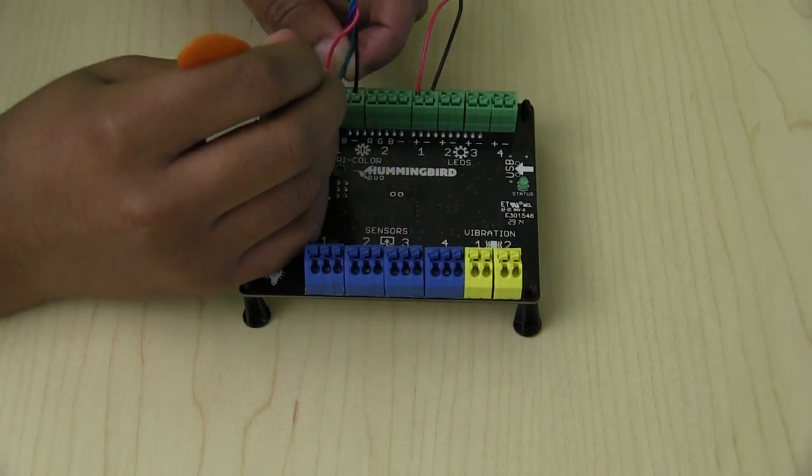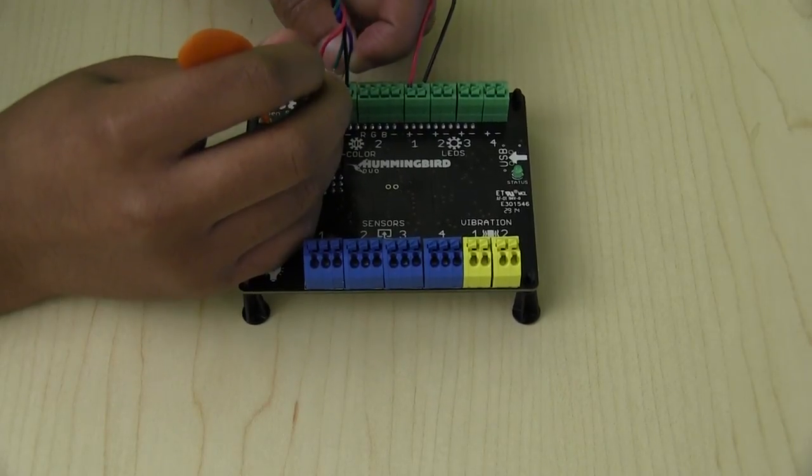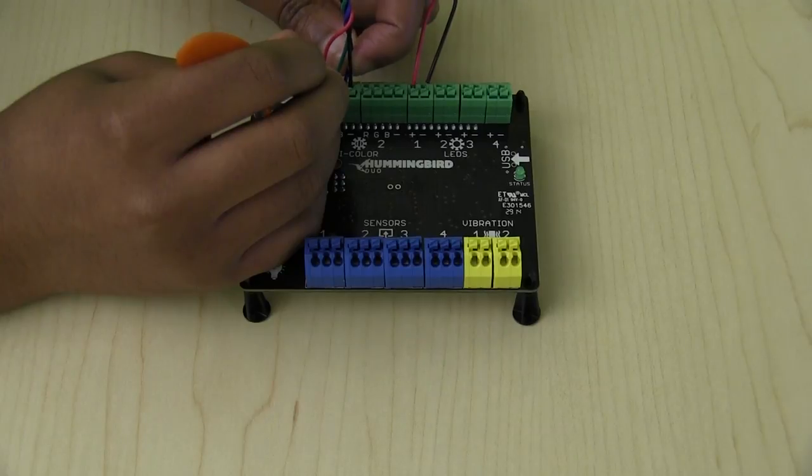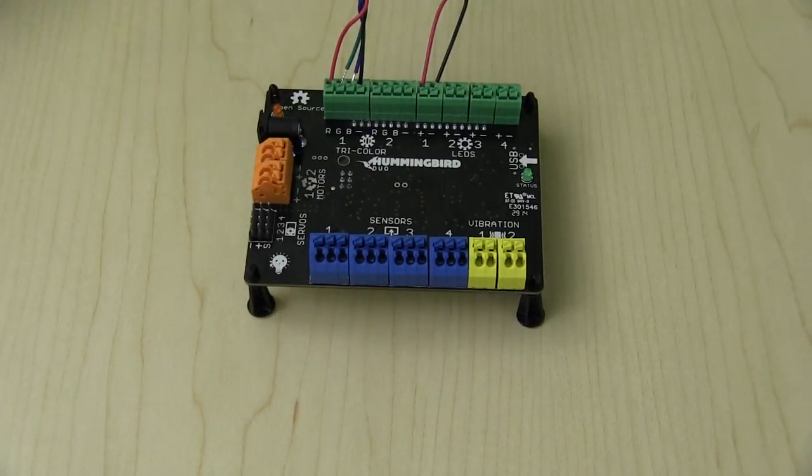To connect a tri-color LED, insert the black wire into the negative or minus terminal. The rest are plugged in by color. The red wire in the R terminal, the green wire in the G terminal, and the blue wire in the B terminal.